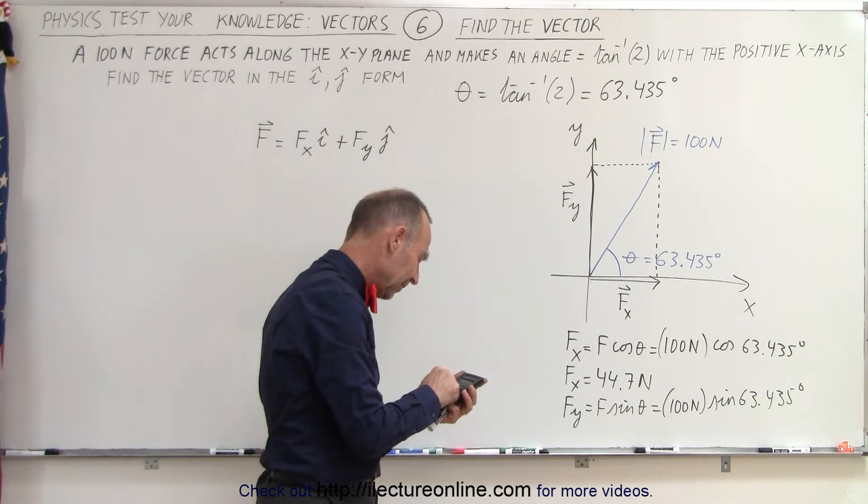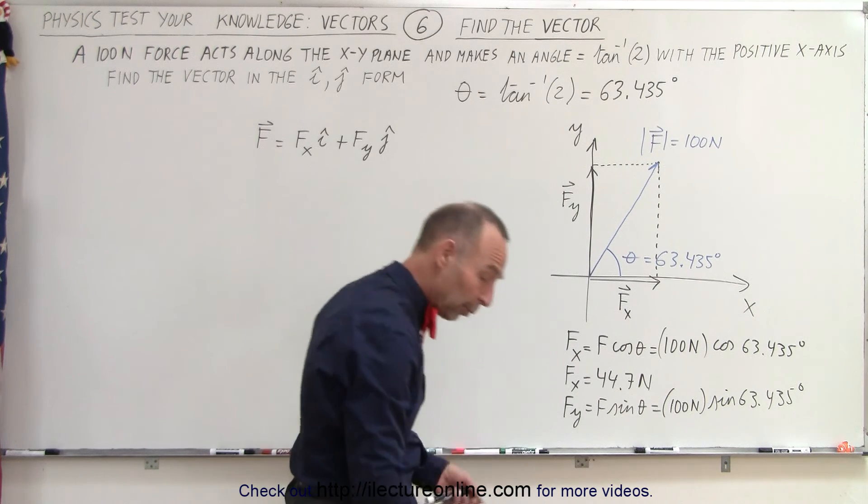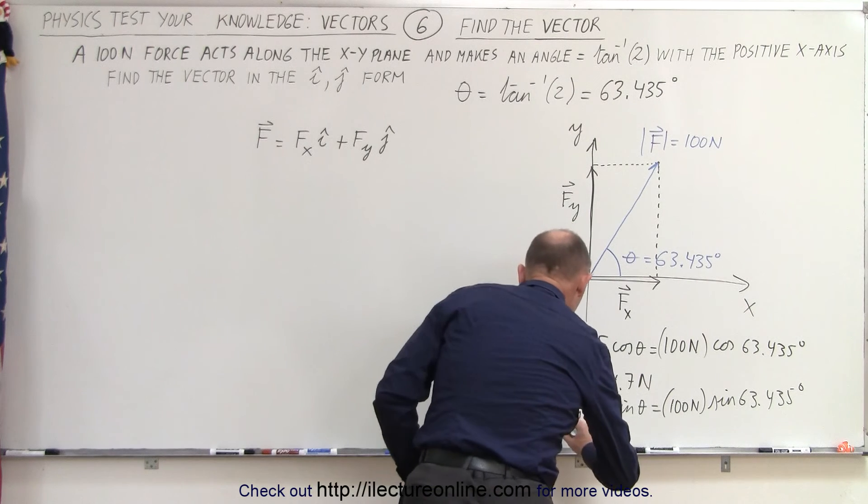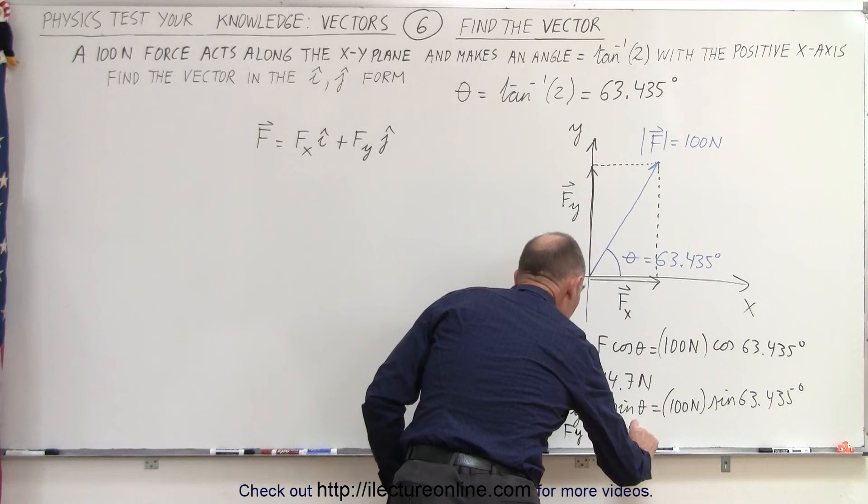63.435, take the sine of that, and multiply it times 100, and we get 89.4. So that would be F sub Y is equal to 89.4 Newtons.